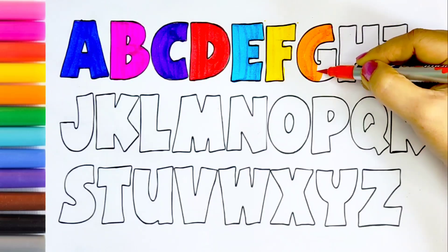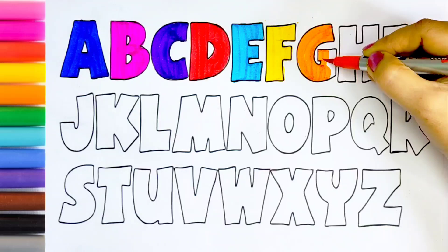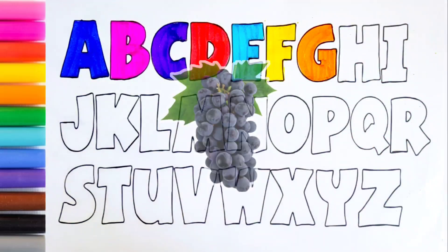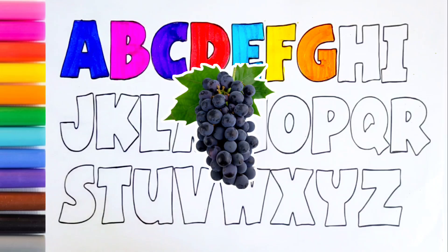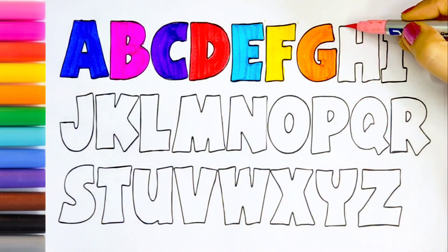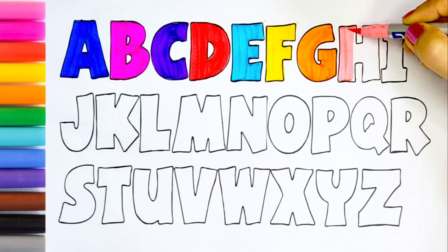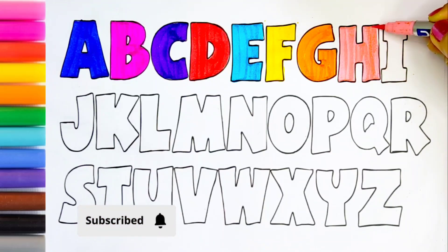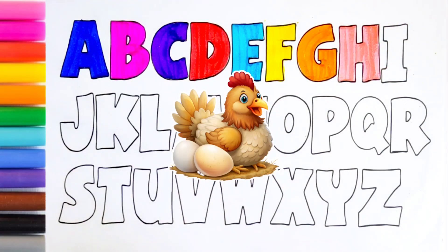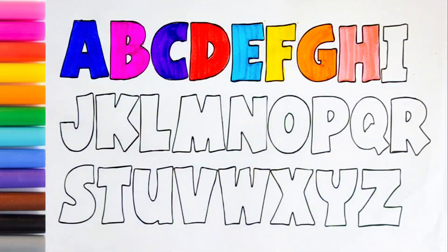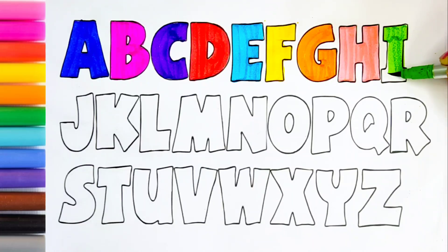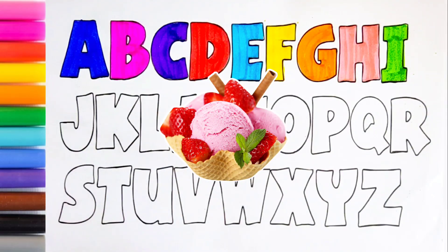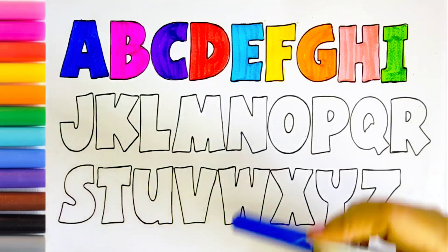Now I know my ABCs, next time won't you sing with me. Blue color. G for grapes, G for grapes. Blue color. H for hen, H for hen. Light green color. I for ice cream, I for ice cream. Blue color.